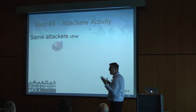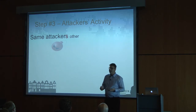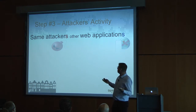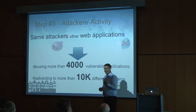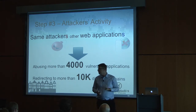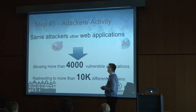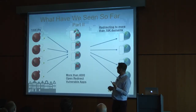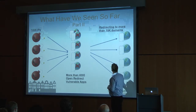Step number three: now we know we have 1,000 IP addresses doing something malicious. We wanted to look across the entire Akamai platform — all data going to all Akamai customers — to figure out if something is happening there. Surprisingly, we found that those IP addresses abuse more than 4,000 vulnerable applications to open redirect, redirecting to more than 10,000 different domains. That brings us to an entirely new scale: 1,000 IPs, 4,000 open redirect vulnerabilities, more than 10,000 domains.